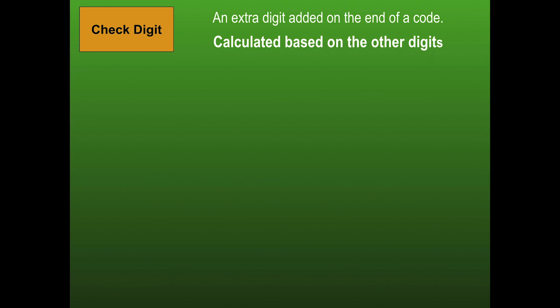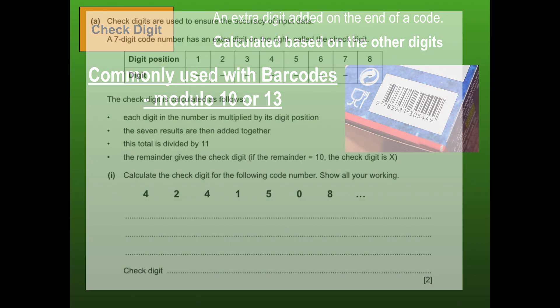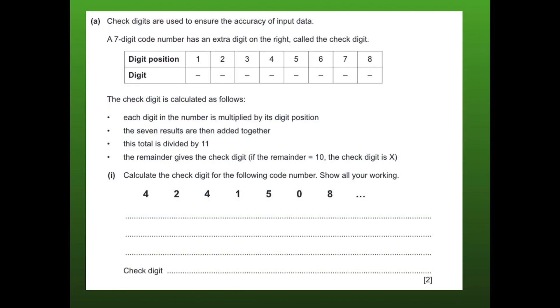Very similar to a checksum is a check digit. That is also based on a calculation on the data. The check digit is an extra digit on the end of a code, commonly seen on barcodes. These can use methods like modulo 10 or modulo 13. In exams, you'll typically be given specific instructions for performing the check digit calculation.